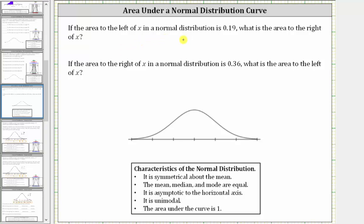If the area to the left of x in a normal distribution is 0.19, what is the area to the right?